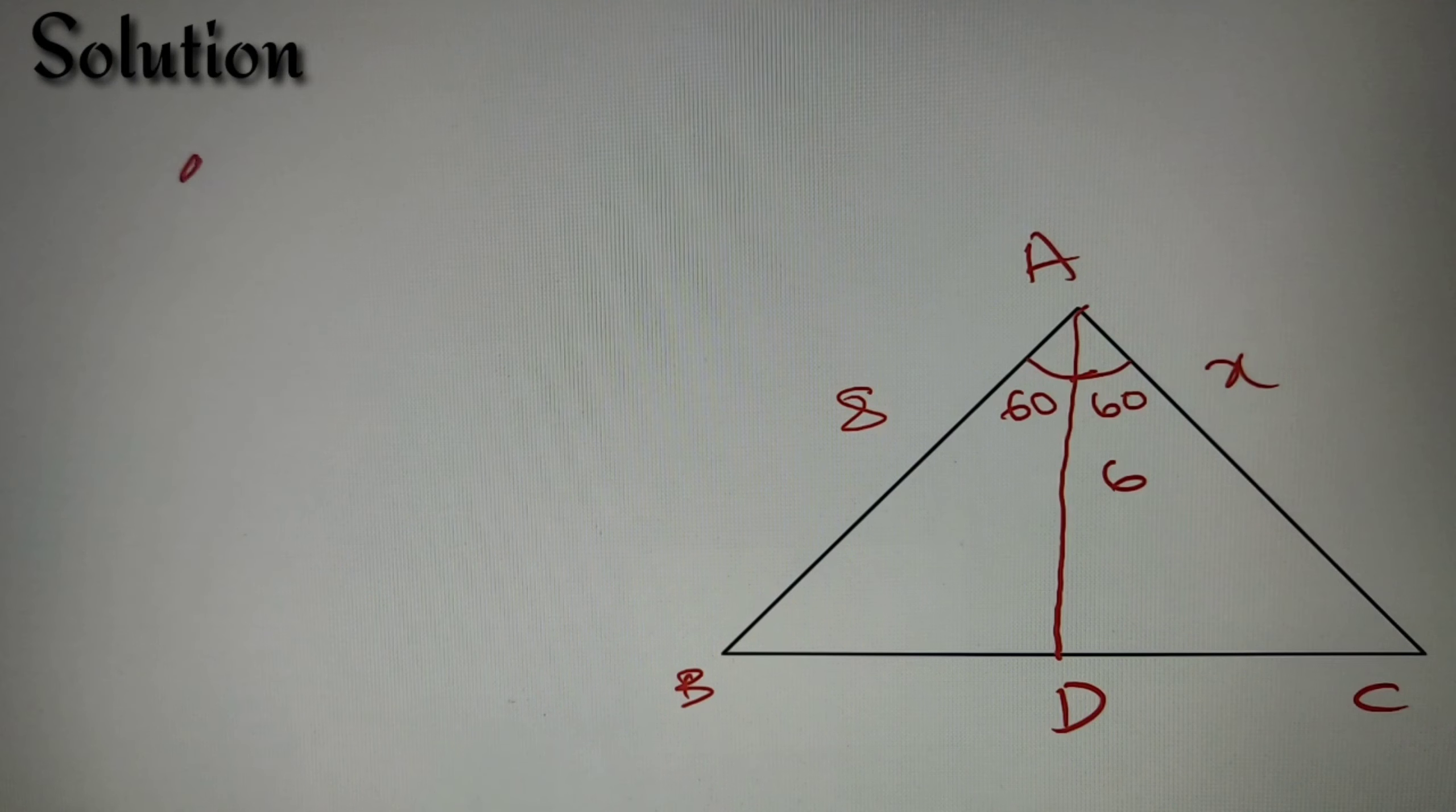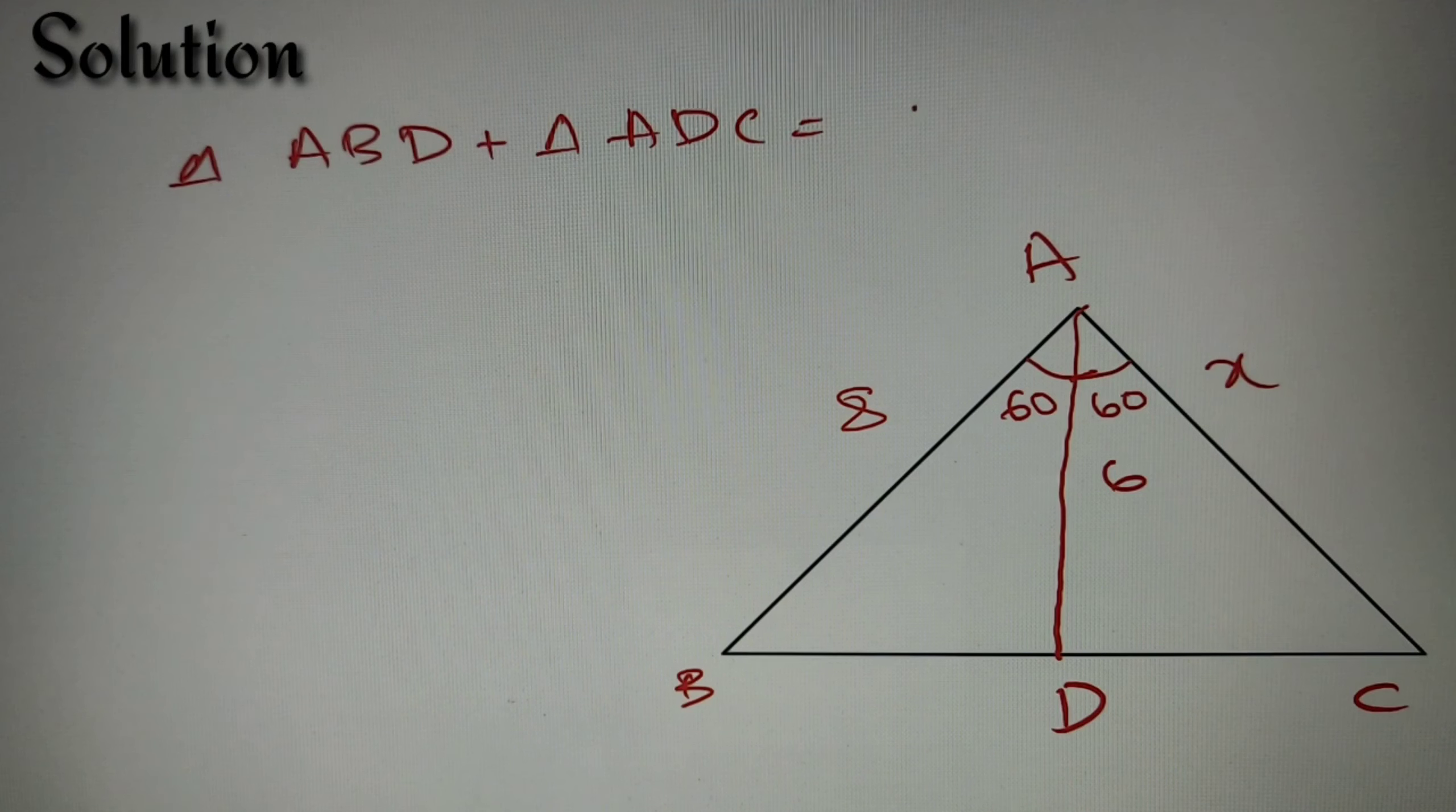So according to our last step, we had to find the area of triangle ABD and then add it with the area of triangle ADC, and then it is equal to the area of the whole triangle ABC, and from here we were able to find X.